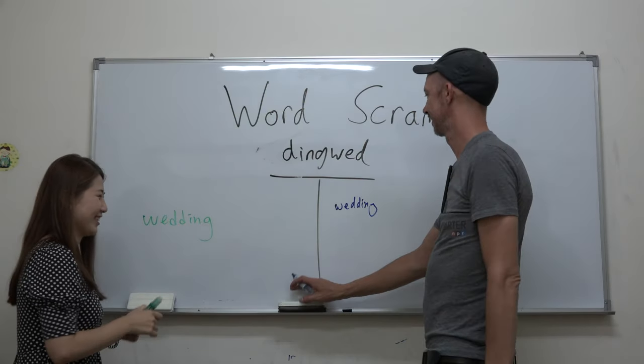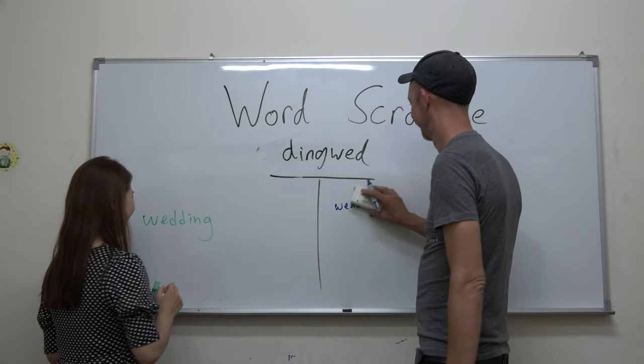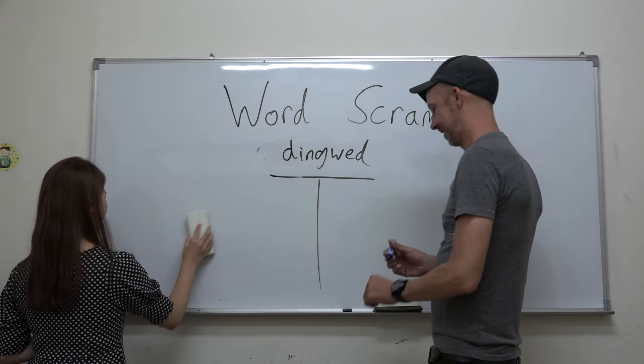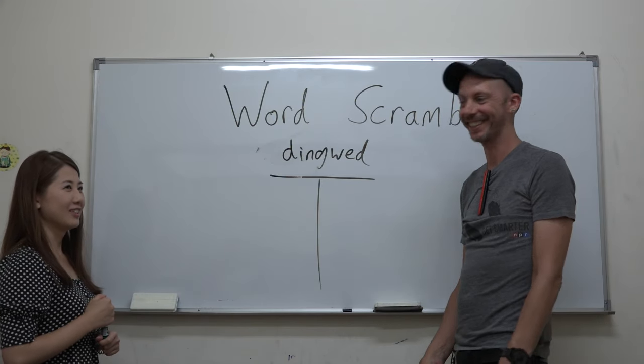Paper scissors stone, paper scissors stone. Oh, okay Carson, can you make a sentence of weddings? Yes, weddings can be very expensive. Okay.